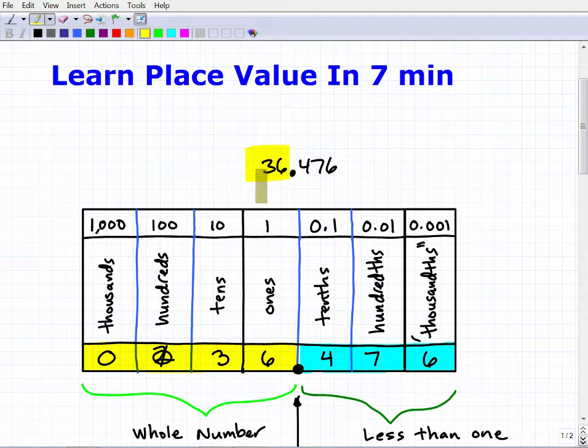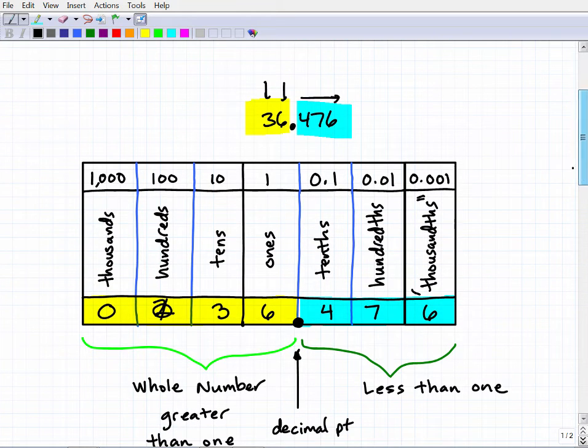We have a decimal point, and in the place value system, numbers or digits to the left of the decimal point are whole numbers. These are going to be greater than one or one or greater. And then numbers to the right, or digits to the right of the decimal point, are going to be less than one. This is kind of a comprehensive place value chart.